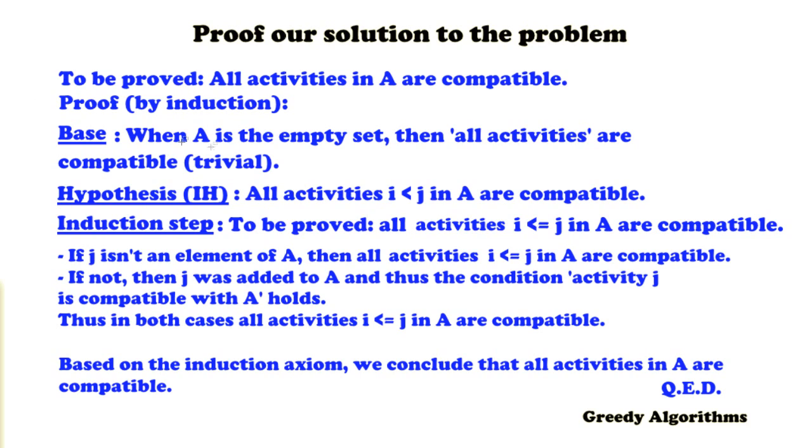So in the base case, we're just going to assume an empty set of activities. So A is empty. Thus, all activities are compatible. Well, that's quite trivial, of course, but it's the base case.